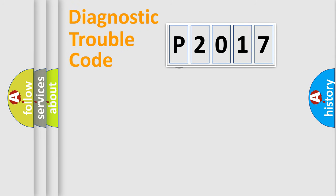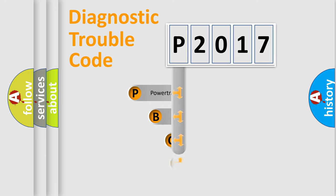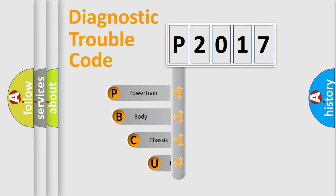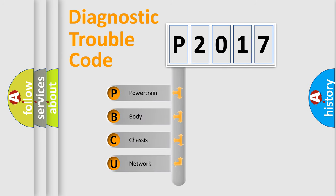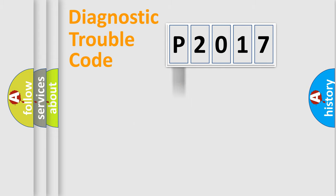First, let's look at the history of diagnostic fault code composition according to the OBD2 protocol, which is unified for all automakers since 2000. We divide the electric system of automobile into four basic units: Powertrain, Body, Chassis, and Network. This distribution is defined in the first character of the code.